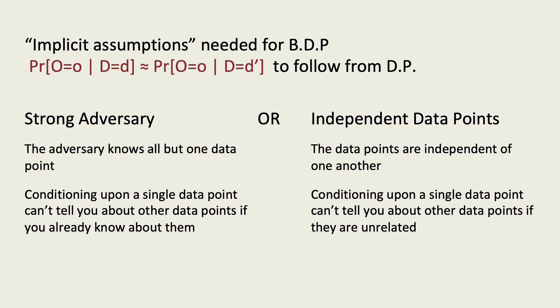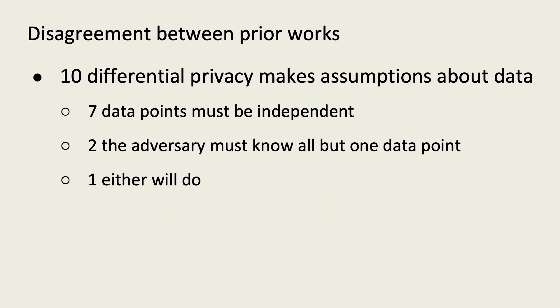While either assumption works, neither is realistic in many settings. How would an adversary know everyone else's data points? If the data points are independent of one another, how are they related enough to be worth collecting together? This state of affairs has led some prior work to claim that differential privacy implicitly makes one or the other of these assumptions. This claim has been controversial, with others disputing the idea that differential privacy requires either assumption or is broken without making one. They instead say that those making claims of implicit assumptions are trying to shoehorn differential privacy into fitting unrelated statistical properties.